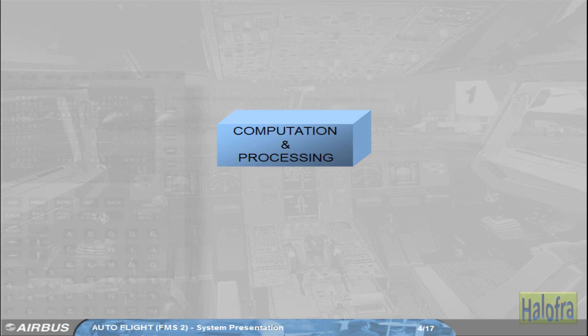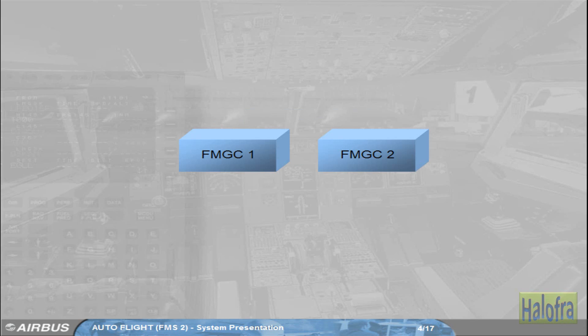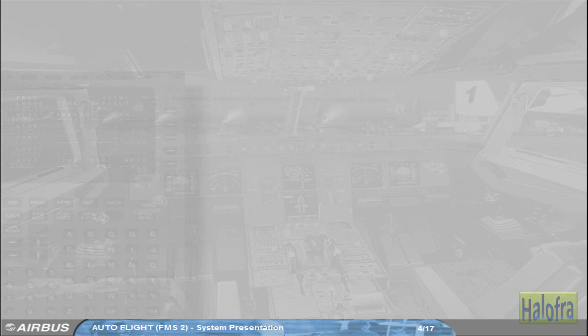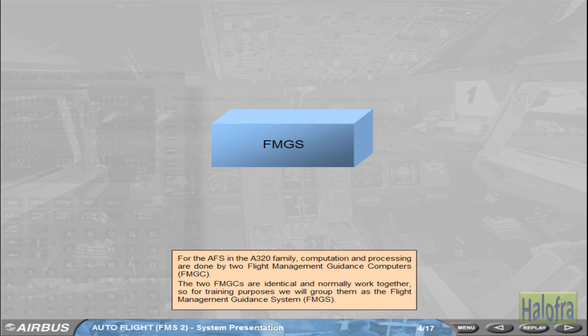For the AFS in the A320 family, computation and processing are done by two flight management guidance computers, FMGC. The two FMGCs are identical and normally work together, so for training purposes, we will group them as the flight management guidance system, FMGS.